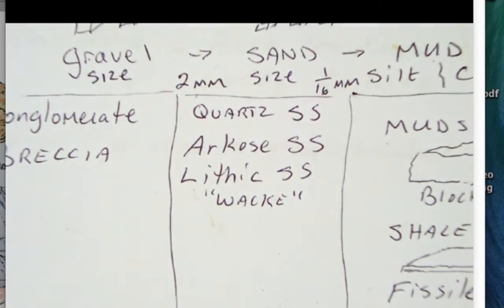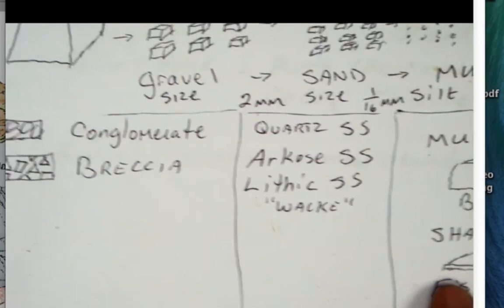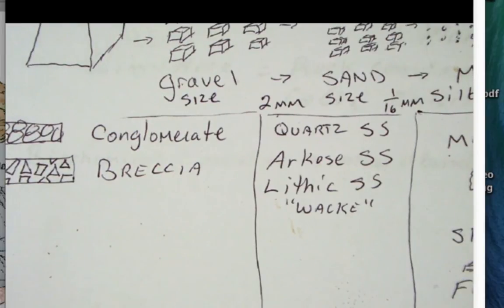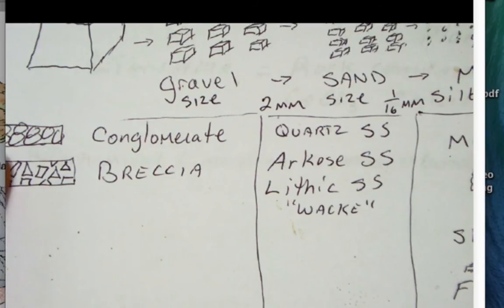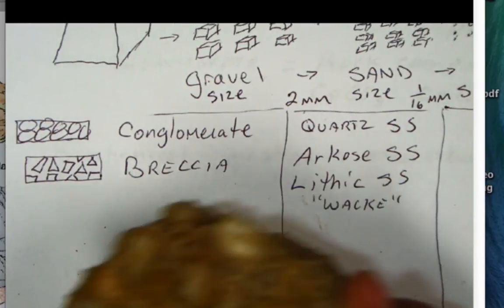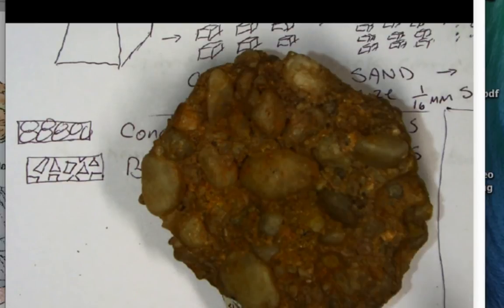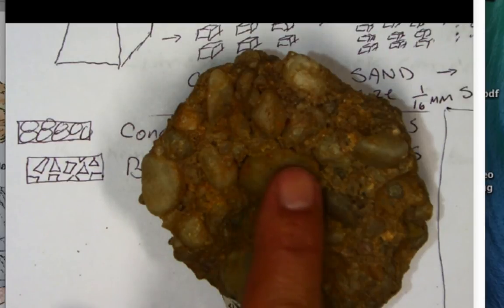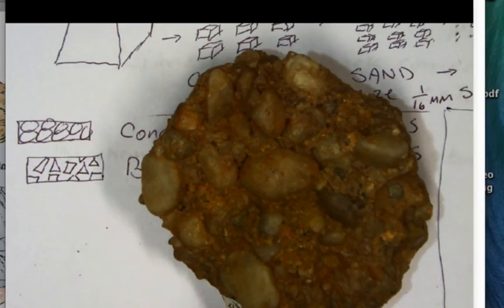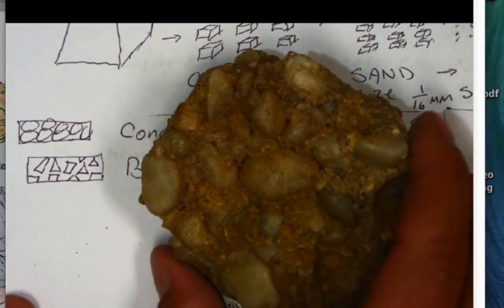Now, in terms of the gravel size particles, if the grains are rounded like this, then we call it a conglomerate. So here is a conglomerate. You can see usually in the environment, this must have traveled down a river some distance, and the sharp edges of the grains were weathered away, abraded away. And so a conglomerate has had a little bit more history in that it's traveled in a high-energy environment. And the sharp edges have been worn away.